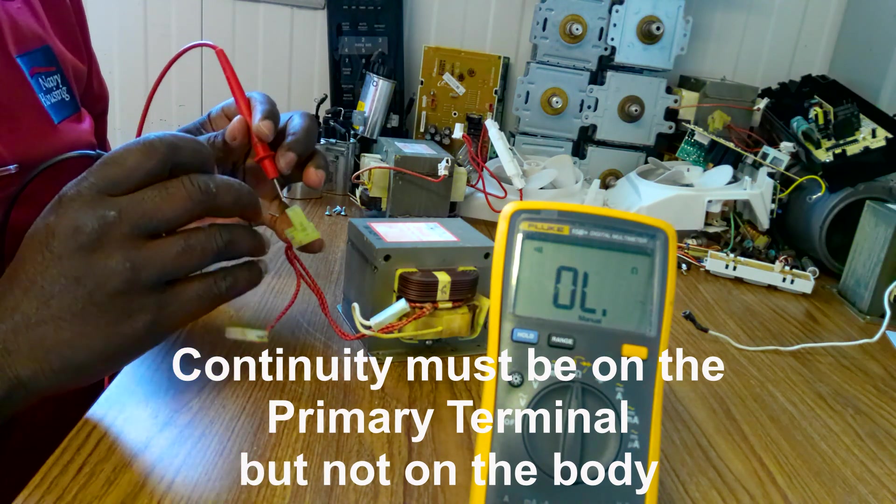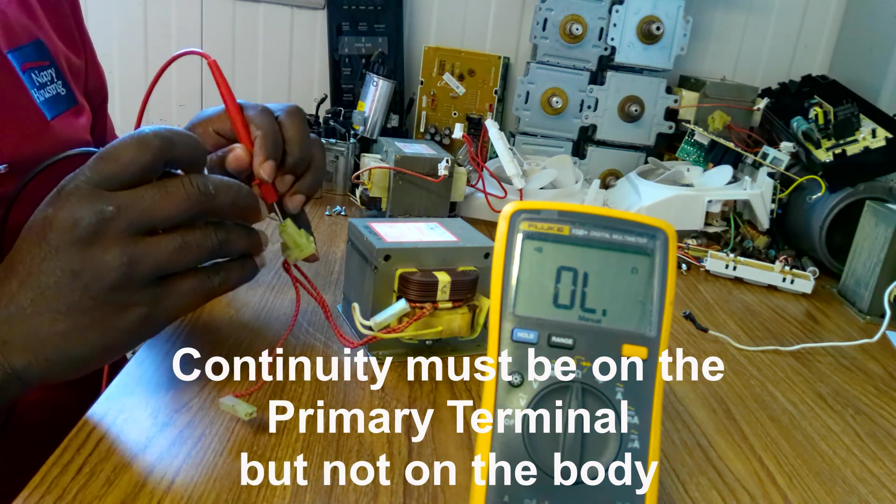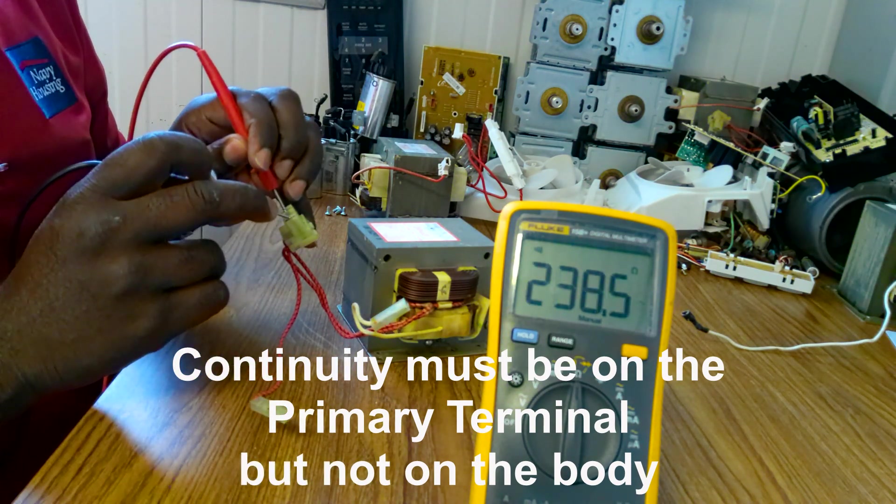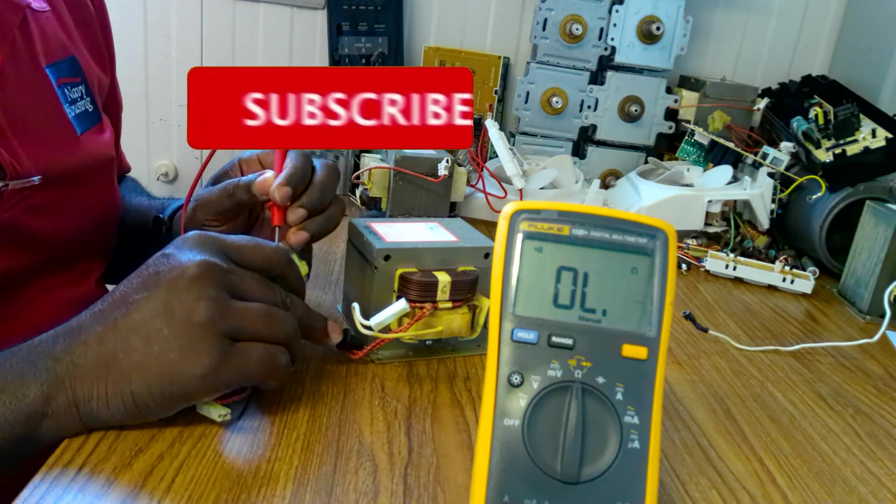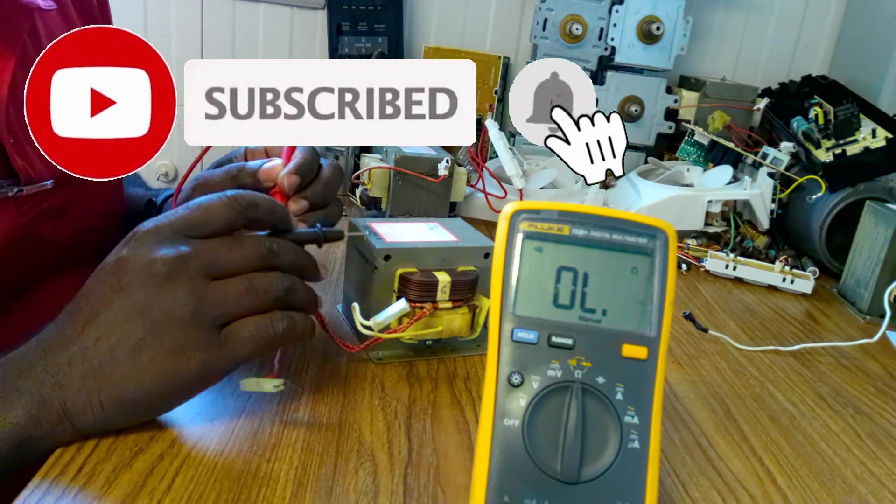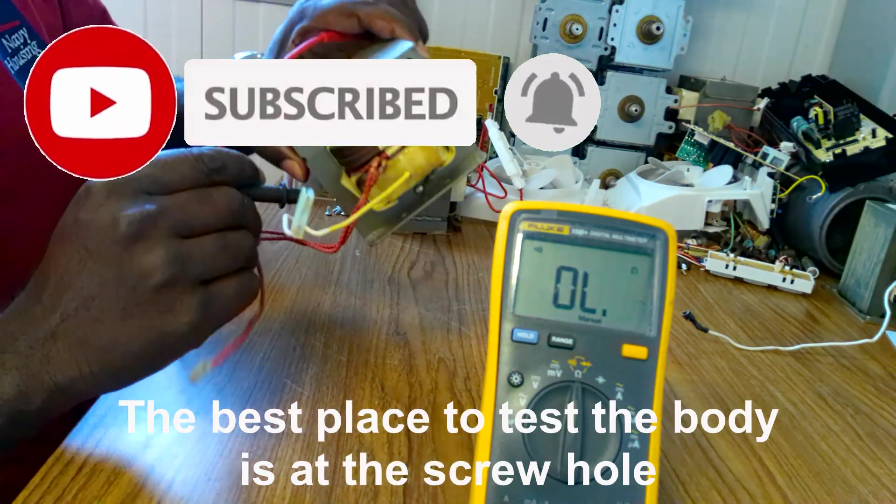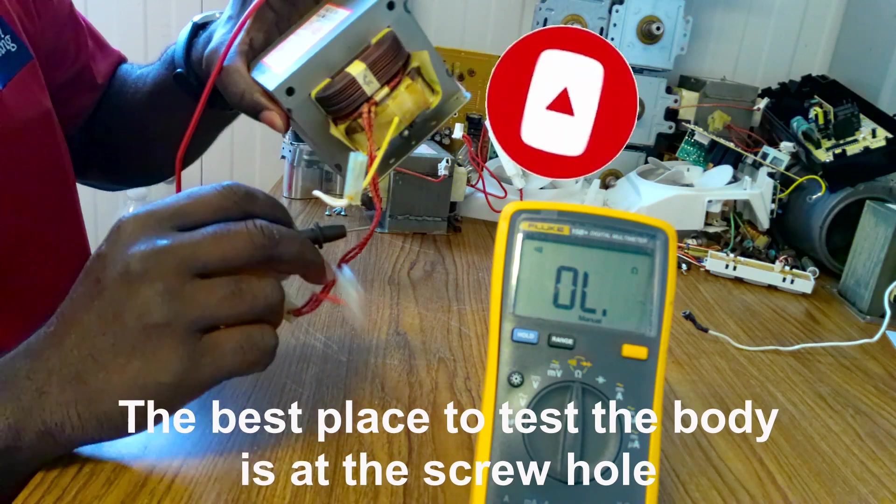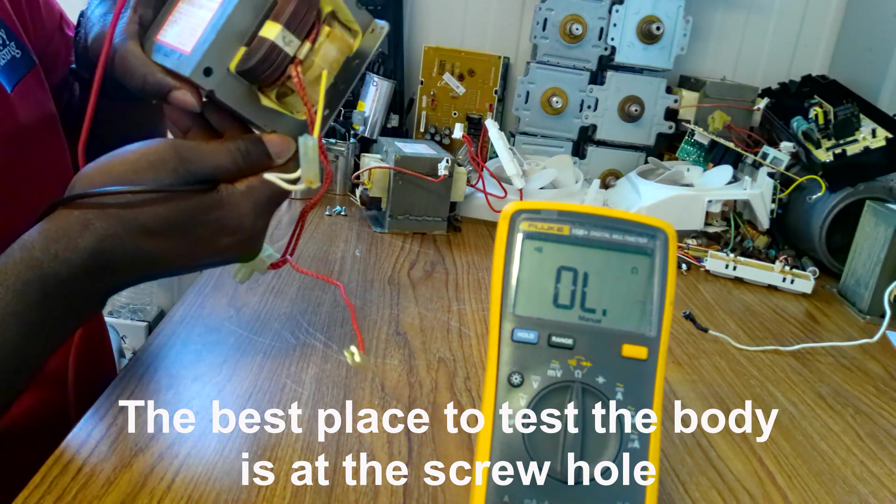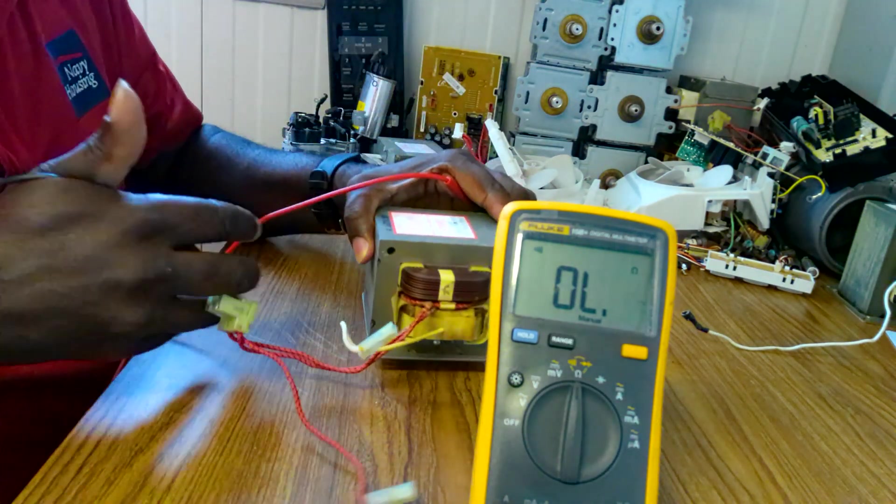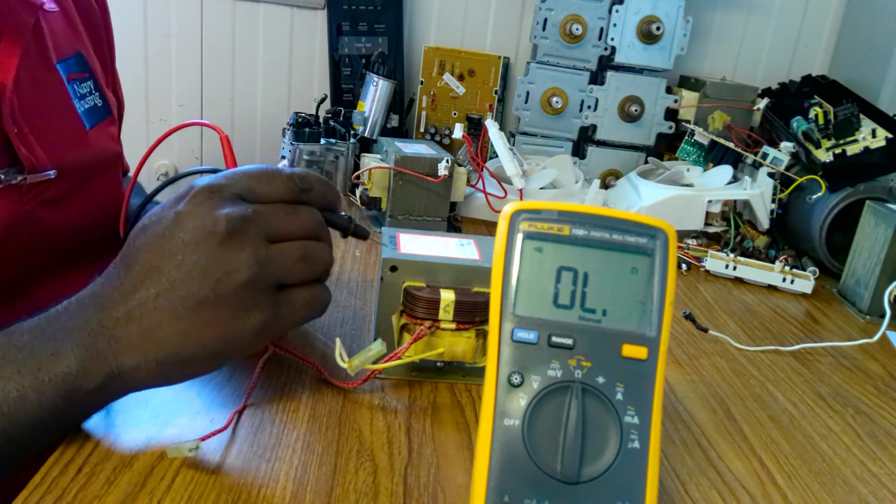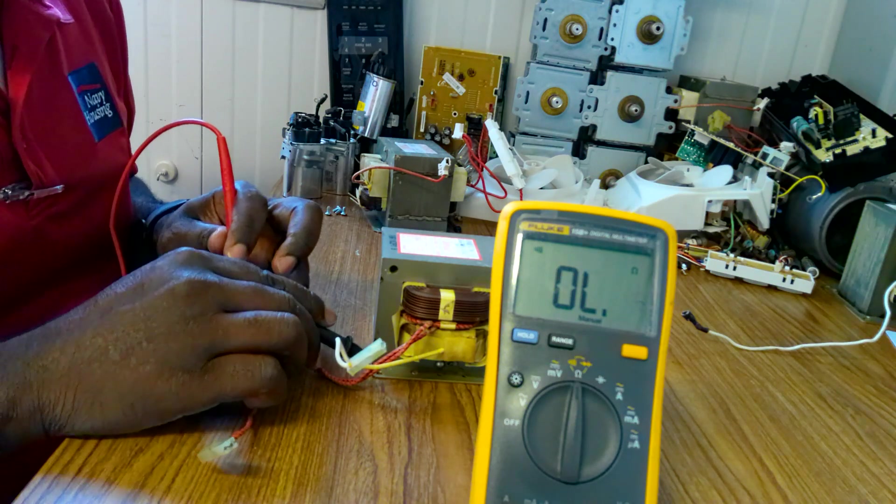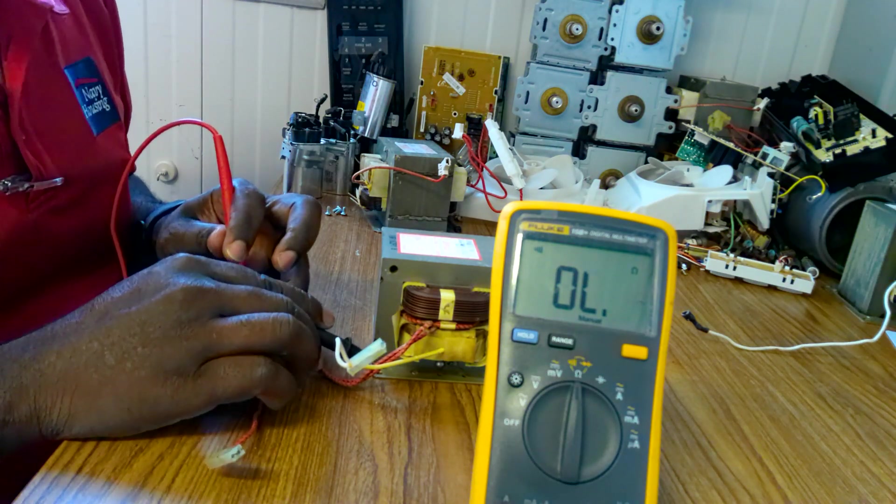Now we're going to test for continuity. Test it with the shell. The best way to test the shell is right where the screw works, because the body is coated over it so we will not get any reading where the screw works.